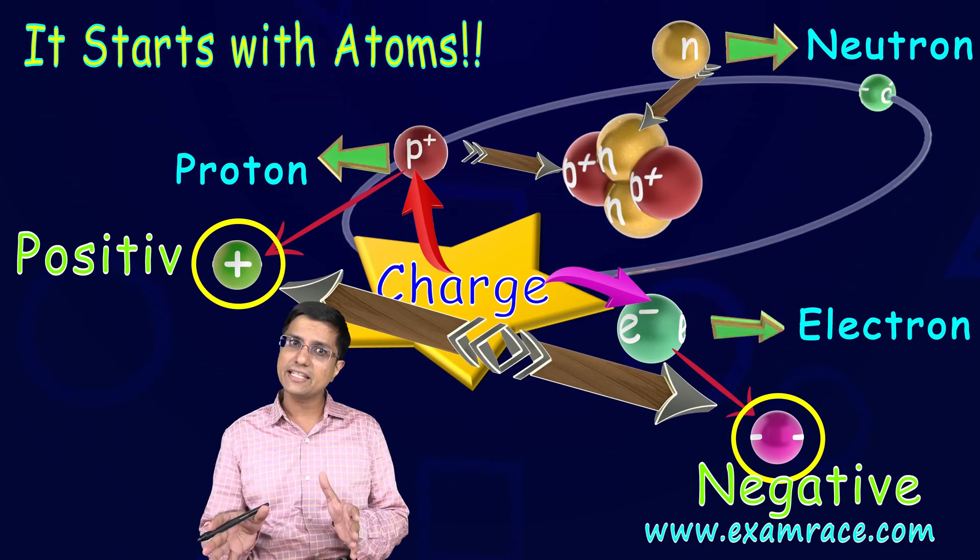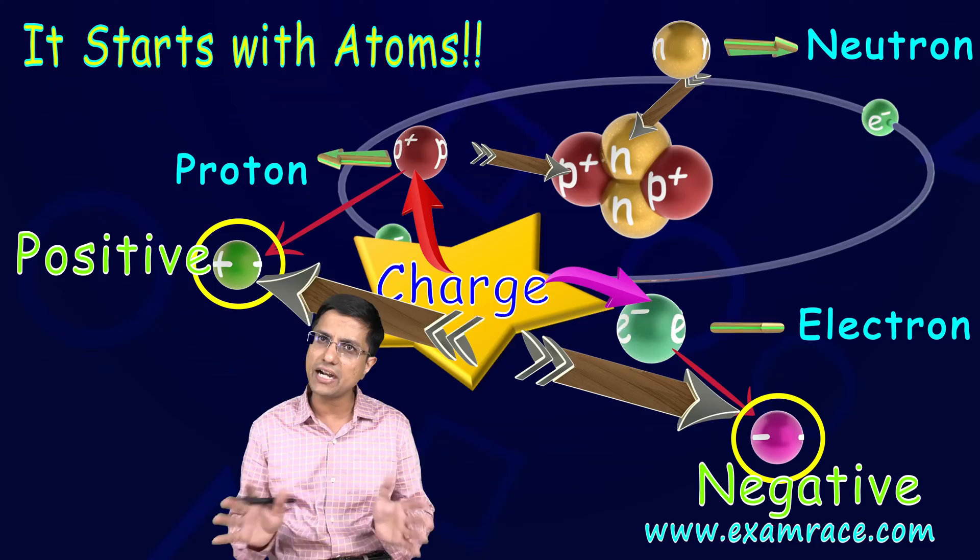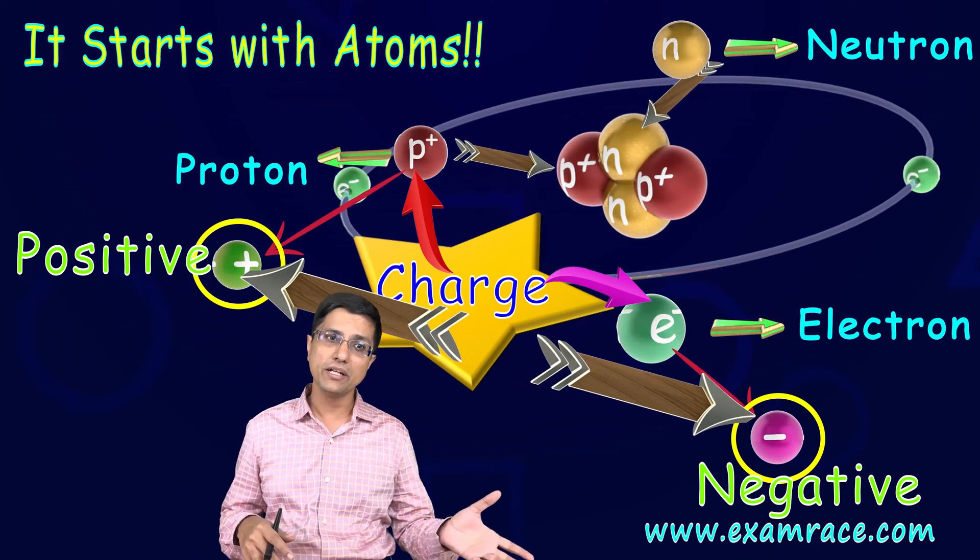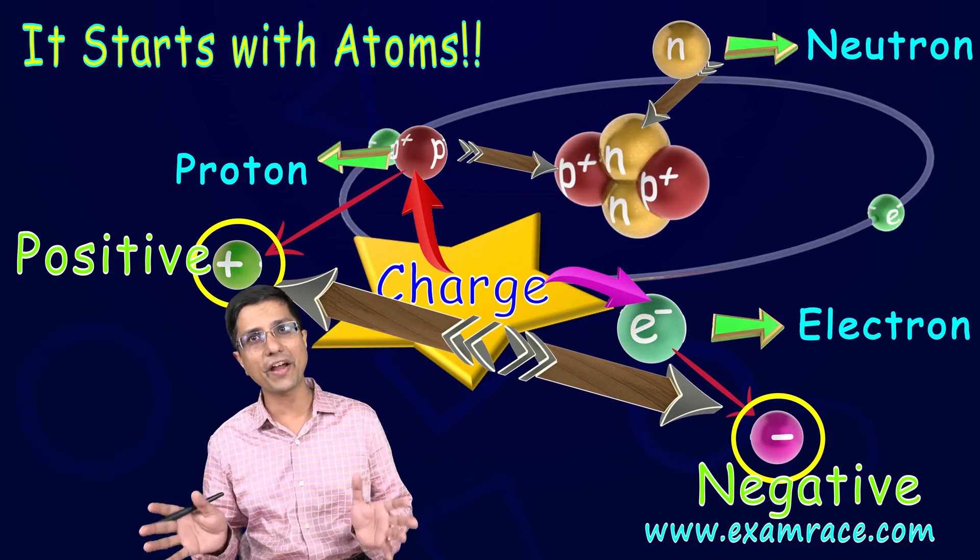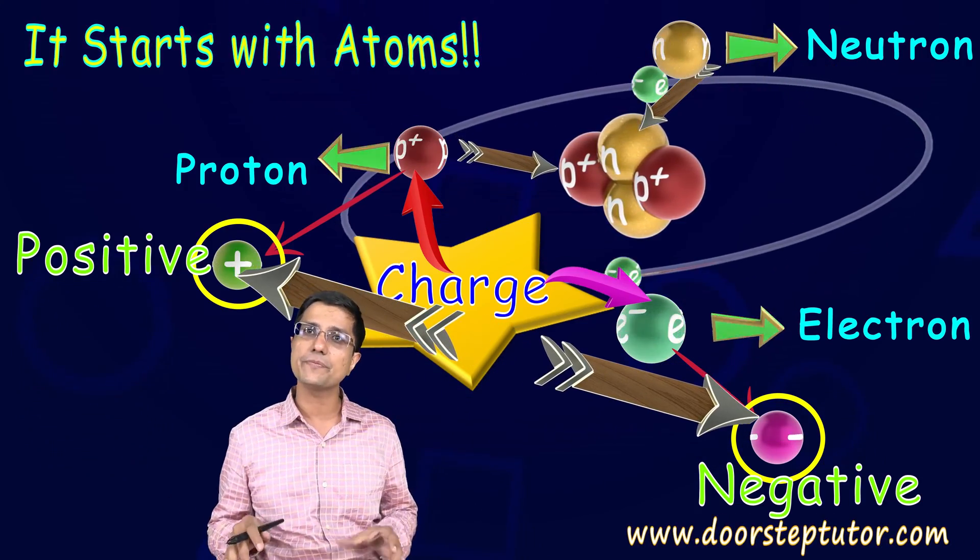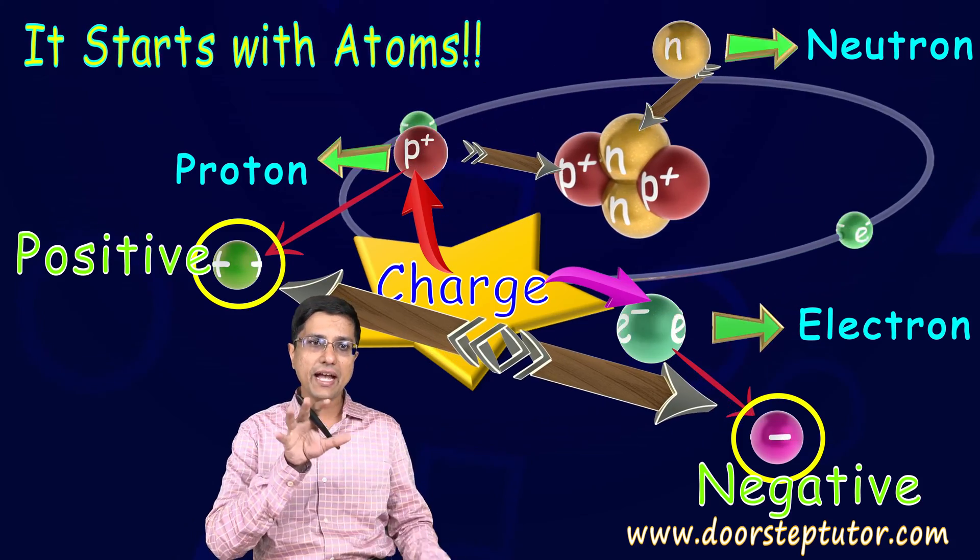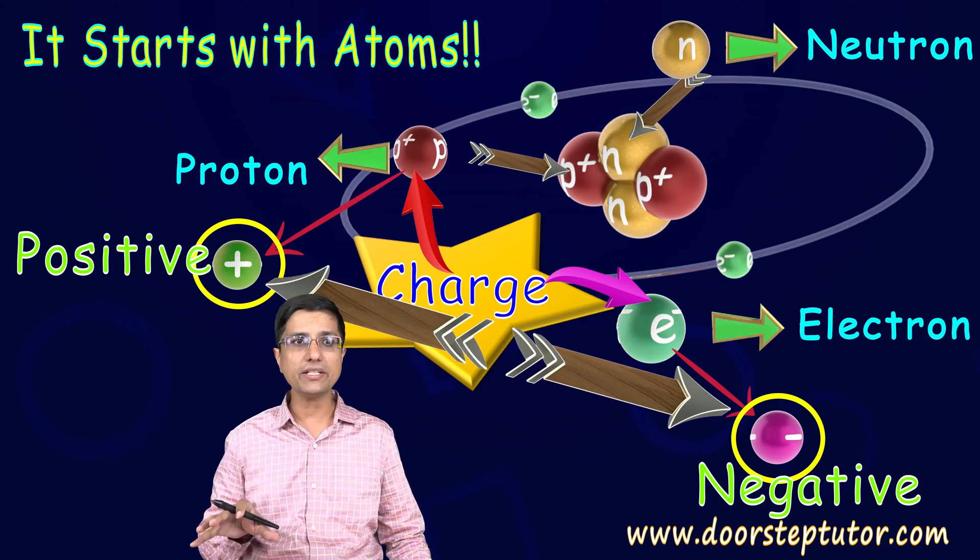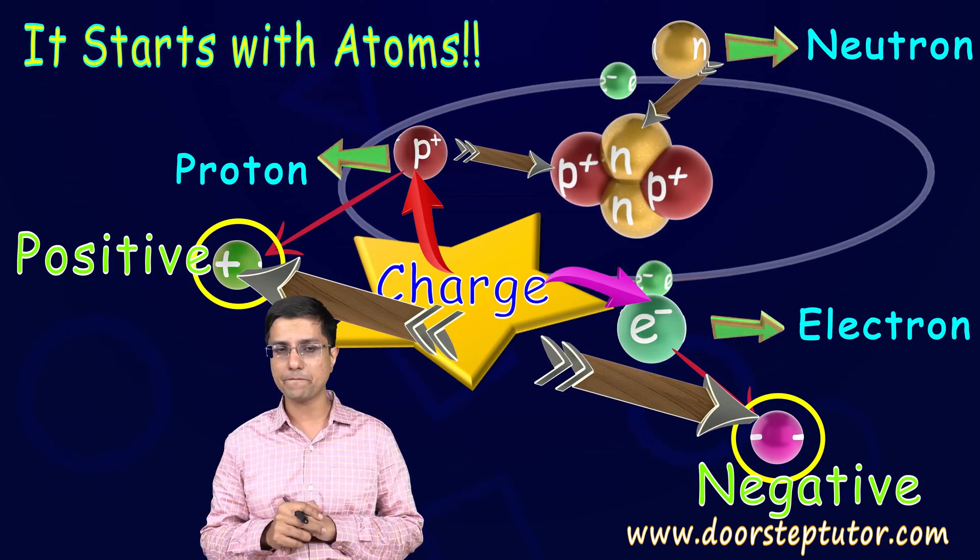Understand that this naming was 100% arbitrary. I could have called one Jill and another one Jack, that would have been fine too. It's just a convention. We say that the charge on an electron is negative and the charge on the proton is positive.